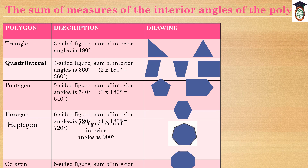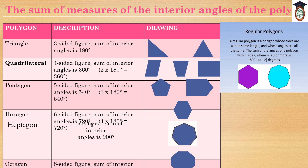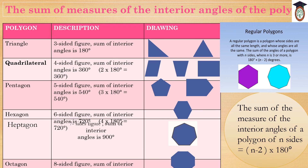A hexagon is a six-sided figure — sum of interior angles is 720 degrees. A heptagon is a seven-sided figure — sum of interior angles is 900 degrees. An octagon is an eight-sided figure — sum of interior angles is 1080 degrees. A regular polygon is a polygon whose sides are all the same length and whose angles are all the same. The sum of angles of a polygon with n sides, where n is 3 or more, is 180 degrees times (n minus 2).